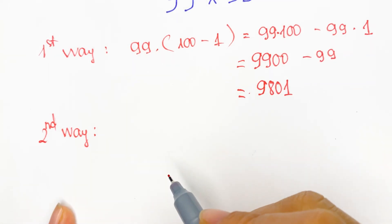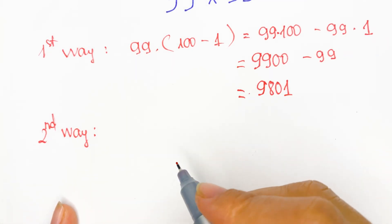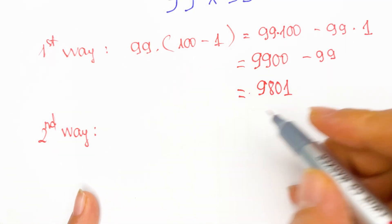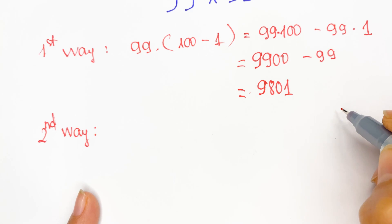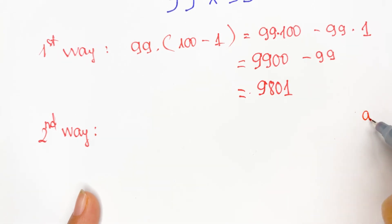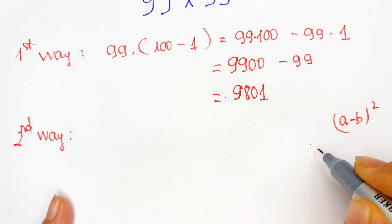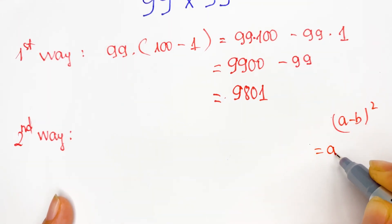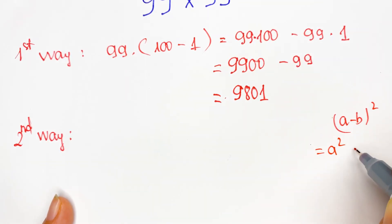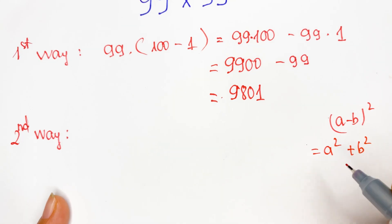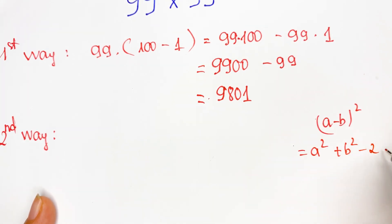In this case, you can use the square of a binomial. A minus B, squared, is equal to A squared plus B squared minus 2AB.